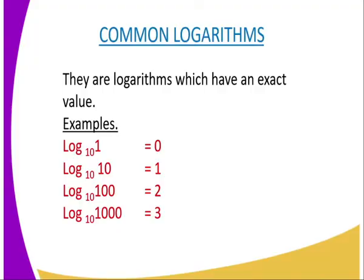On the common logarithms, there is a term known as common logarithms. These are logarithms which have an exact value. For example, we have the log of 1 to base 10, the log of 10 to base 10 which is equal to 1, the log of 100 to base 10 which is equal to 2, the log of 1000 to base 10 which is equal to 3, and the log of 10,000 to base 10 which is equal to 4, and the list is endless as far as you are looking at the factors of 10.